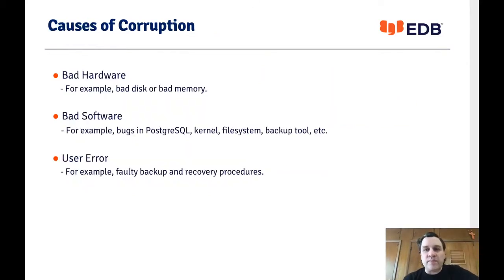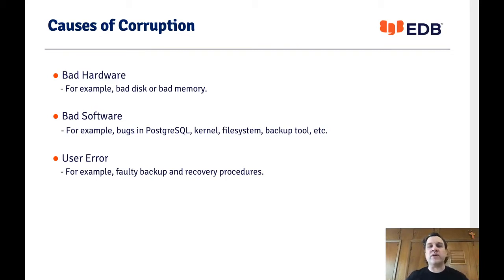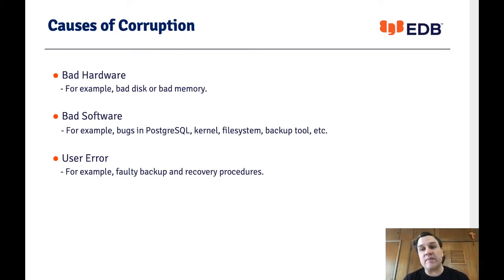At a high level, there are three ways this can happen. The first is bad hardware — most commonly a bad disk. All disks go bad, even very expensive ones. If you only have one disk, it might take years, but it's guaranteed to happen eventually. If you have many disks, one or another will probably be failing nearly all the time. Occasionally we also see bad memory, which can corrupt data before it ever reaches disk.